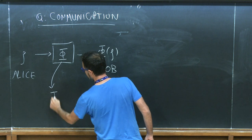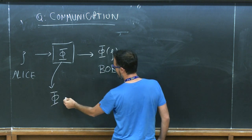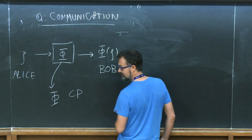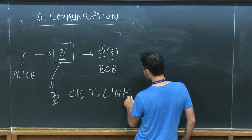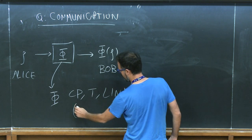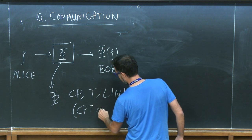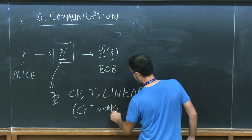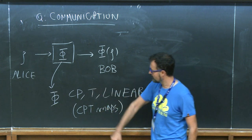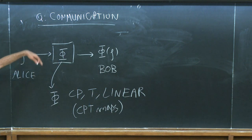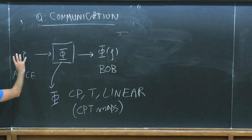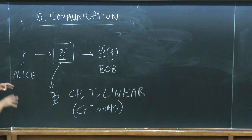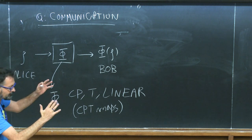This mapping is completely characterized by being completely positive, trace-preserving, and linear. In the literature these are called CPT maps. These maps arise whenever you have a quantum system — the carrier used to send information — interacting with an external environment for some finite time.